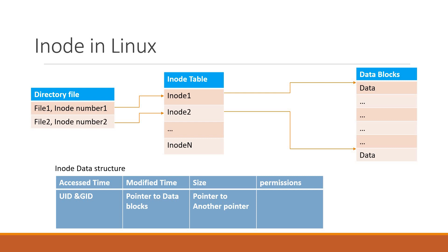INODE is also known as index node. It contains all the metadata of a file and directory in a file system. In addition to the metadata, this INODE will contain the pointer to the actual data, or it will contain a pointer to another pointer which indirectly points to the actual data. This diagram shows the directory file, INODE table, and the data blocks in the file system. When we create a file, an INODE number is assigned to that file, and the entry of the file including the INODE number is present in the directory file of the corresponding directory. This INODE number will point to the actual INODE information of the INODE table.